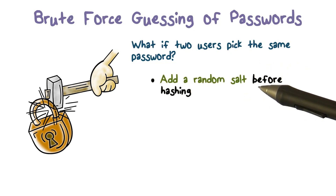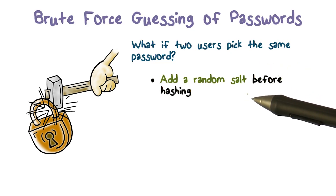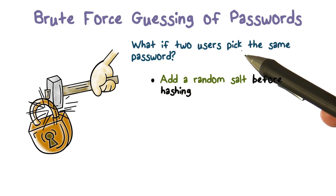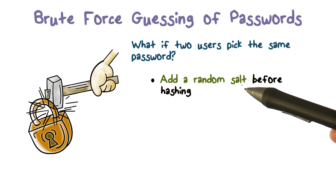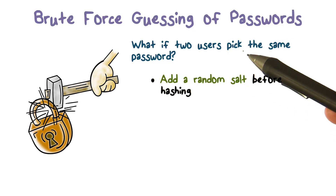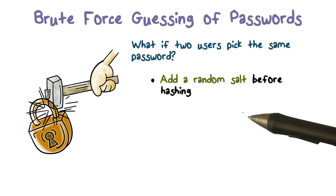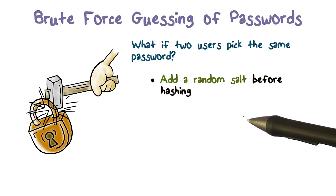Fortunately, we have a solution to that. We add a random number — called a salt — before we do the hashing. We take the password string and add this random salt. The random salt will be different for different users, which makes the hash value different for different users. If two users pick the same password without the salt, their hash value will be the same, but with the salt, the hash value will be different.